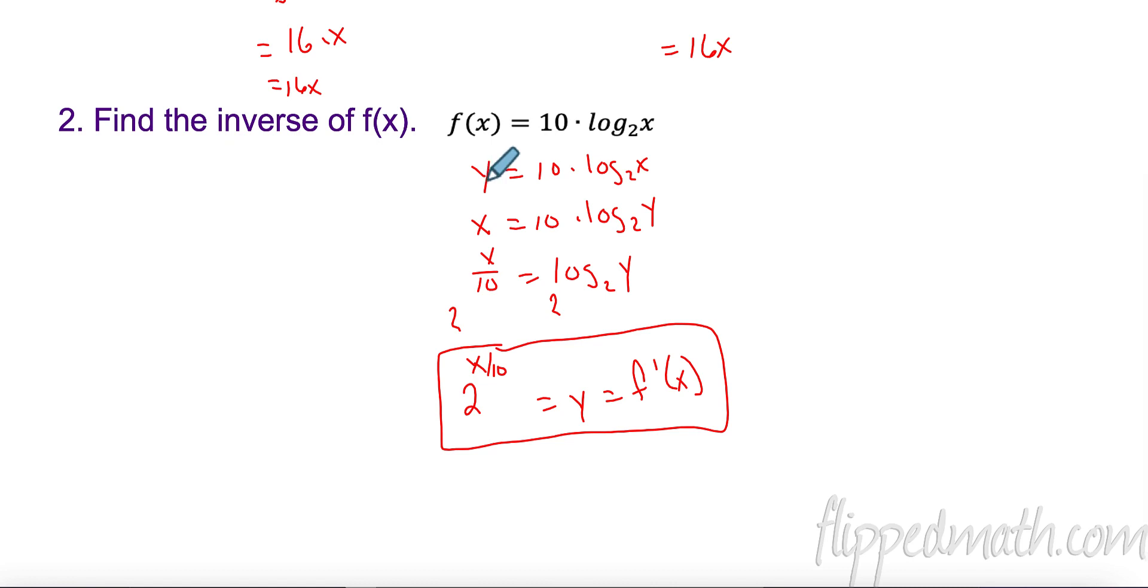Number two, I first of all took my Y's and made it my X's and my X my Y. I did the opposite of multiplying by 10, which is dividing by 10. Now this is the new part here. It was log base two. So I had to take it to the exponent of base two, base two on this side. All of this canceled because two to the log of two, that cancels. They're the inverses. So that gives me Y and my inverse is two to the X over 10. You could have written it as two to the one 10th X. That would have been the same thing as well.